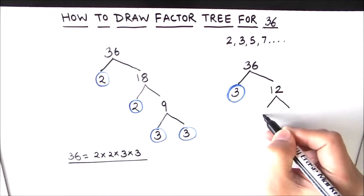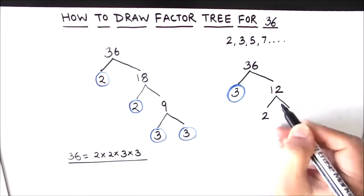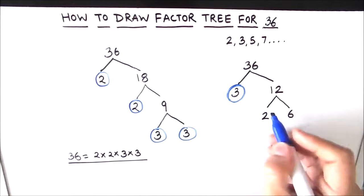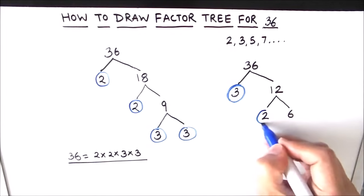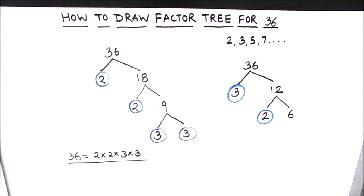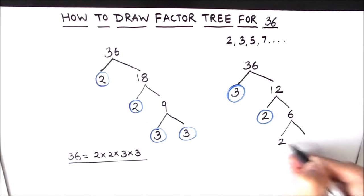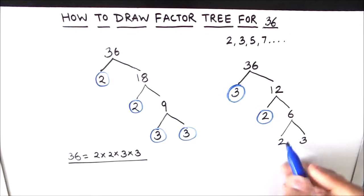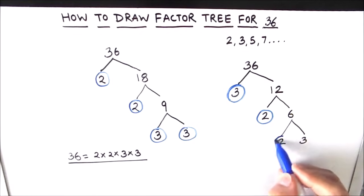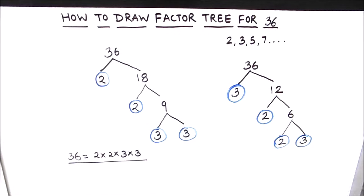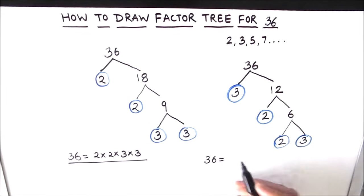Since 12 is an even number, one of its factors will be 2. 2 times 6 is 12, and 2 is a prime number so we circle it. Next, 6 can be broken down: 2 times 3 is 6. Both 2 and 3 are prime numbers, so we circle both. Our factor tree for number 36 is complete.